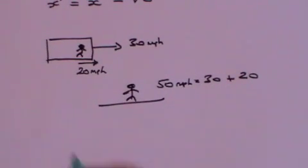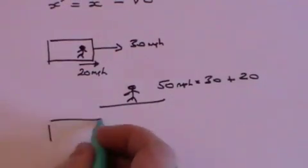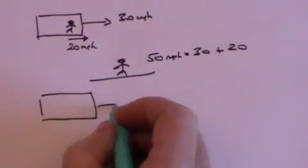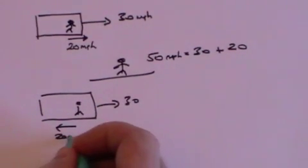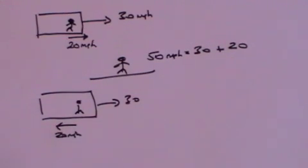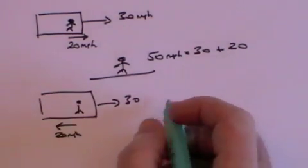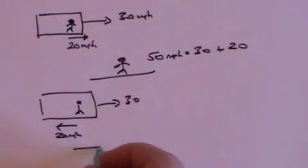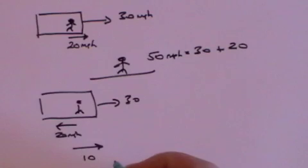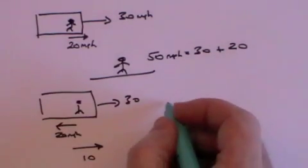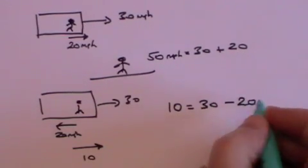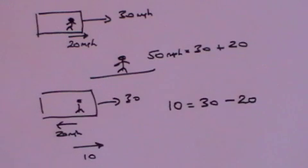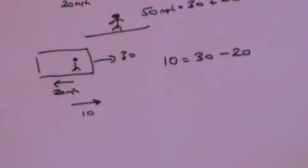Now you turn around and face the other way and again you roll the ball at 20 miles an hour along the corridor of the train, but this time in the opposite direction to the way the train is moving. Now you say to the person on the platform, what speed is the ball traveling? And he will say it is still traveling at 10 miles an hour in the direction of the train, because the train is going at 30 miles an hour, the ball is going backwards at 20 miles an hour, and the net effect is 30 minus 20 which is 10 miles an hour in the direction of the train. So far, so good.